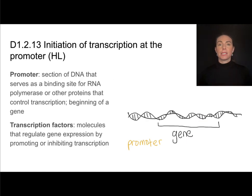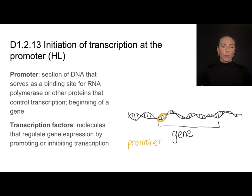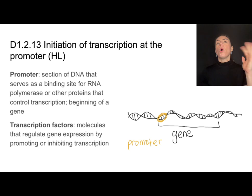Transcription and translation produce proteins, and proteins are coded for by genes. Genes are segments of DNA that code for a specific protein. At the beginning of a gene, we will find a short segment of base sequences called the promoter.